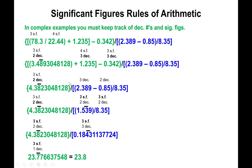If you had been truncating numbers at each step — rounding up the eight to nine and doing that every which way — by the time you reach the final answer you might end up with 23.7 or 23.6 instead of 23.8. The value would be close but inaccurate, and you would get marked down, so be careful with this process.